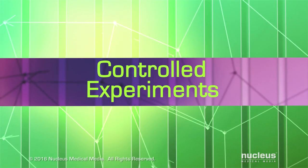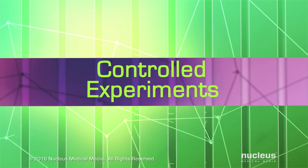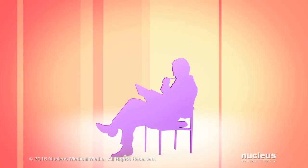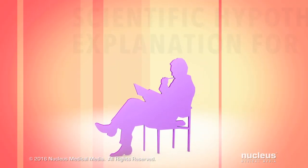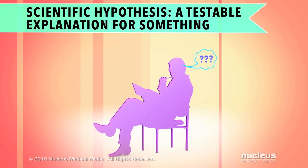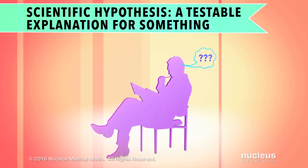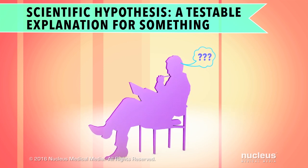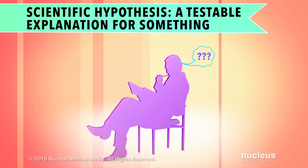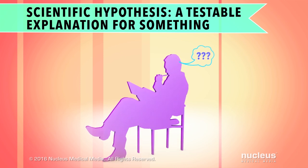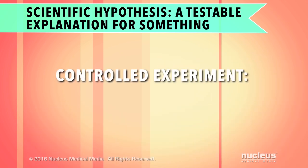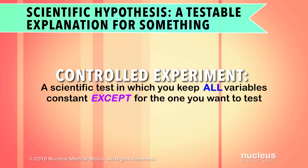What is a controlled experiment and why would you want to do one? Maybe you have an idea that you think might explain a situation. This is called a scientific hypothesis. How could you find out if your hypothesis is correct? You'd set up a controlled experiment in which you control or keep constant all the factors, known as variables, except for the one you want to test.